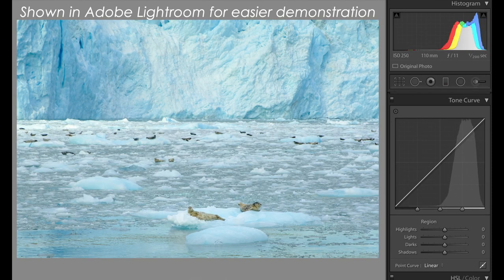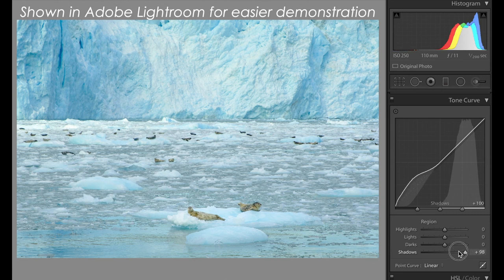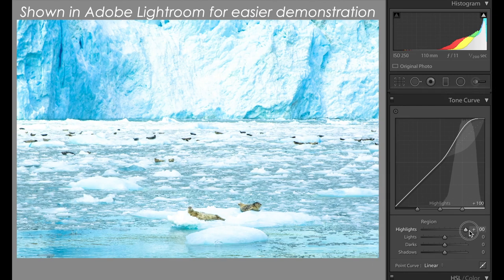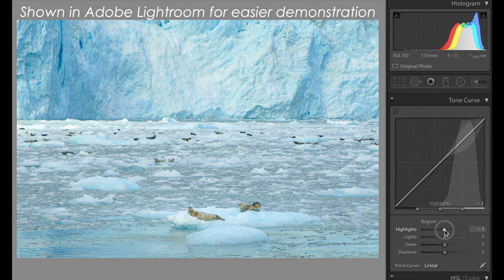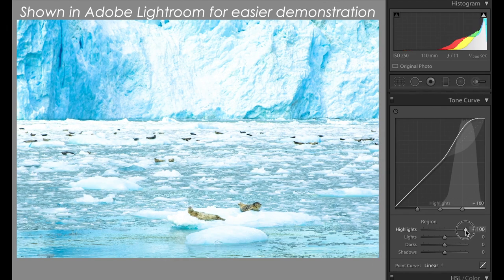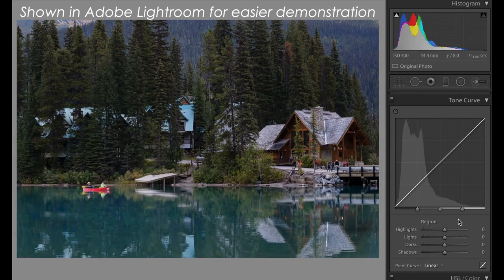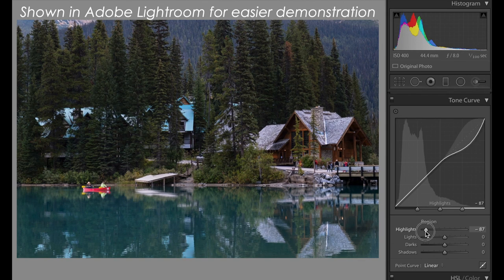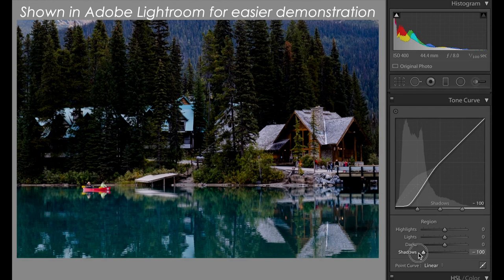If we have a bright photo where most of the photo is on the right half of the histogram, or the highlights, adjusting that shadow tone isn't going to affect it because there's nothing in the shadows. However, adjusting the highlight tone is going to have a major impact on the look of that photo. Conversely, if we have a dark photo where most of the histogram is on the left half of that graph, or the shadow areas, adjusting the highlight tone isn't really going to affect it much at all, but changing the shadow tone is going to have a major effect.